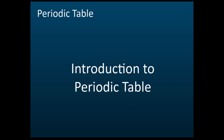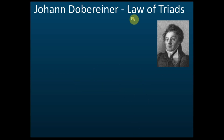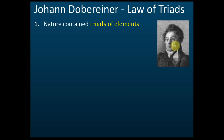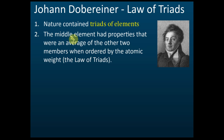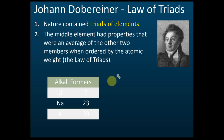This is an introduction to the periodic table — the history of its development. Let's start with Johann Döbereiner. Döbereiner introduced the Law of Triads. According to him, nature contained triads of elements, and in these triads the middle element had properties that were an average of the other two members when ordered by atomic weight.